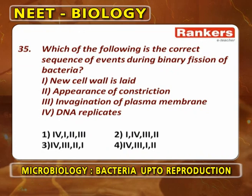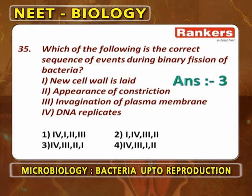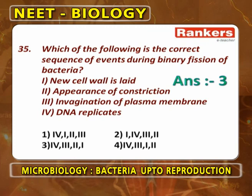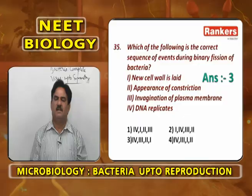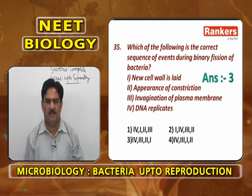Correct sequence of events during binary fission: First, DNA replication takes place; then invagination of plasma membrane occurs; then appearance of constriction occurs; then the new cell wall is laid down. So the correct sequence is: DNA replicates, invagination of plasma membrane, appearance of constriction, new cell wall is laid — option 3, sequence 4, 3, 2, 1.